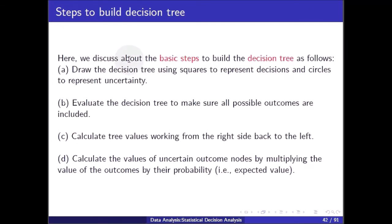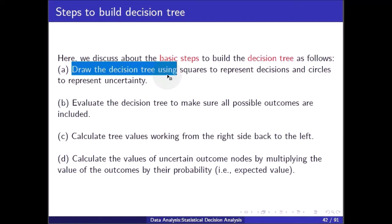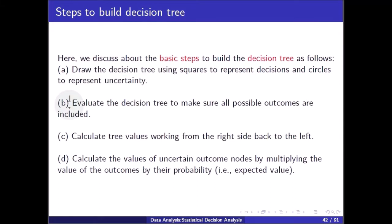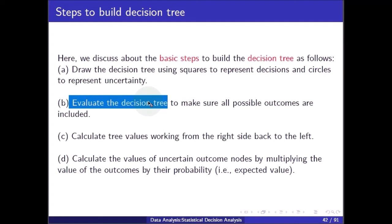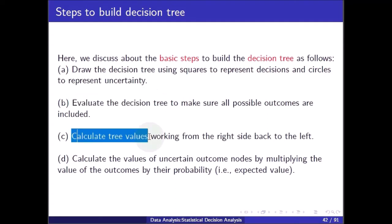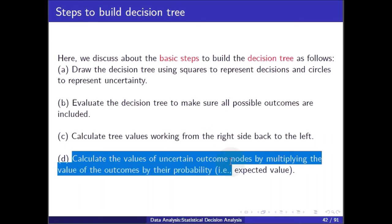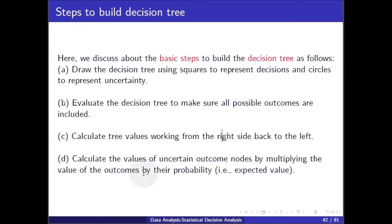Now, the basic steps to build a decision tree are as follows. First, draw the decision tree using squares to represent decisions and circles to represent uncertainty. Second, evaluate the decision tree to make sure all possible outcomes are included. Third, calculate the tree values working from the right side back to the left. Fourth, calculate the values of uncertain outcome nodes by multiplying the values of the outcome by their probability.